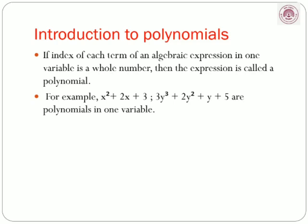Second example: 3y cubed plus 2y squared plus y plus 5. The variable is y. The index of the first term 3y cubed is 3, second term 2y squared is 2, third term y is 1, and 5 is a constant term with index 0. The index of each term is a whole number — 3, 2, 1, 0 — so this is a polynomial.